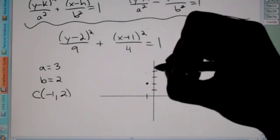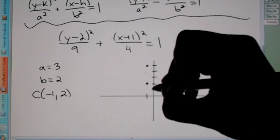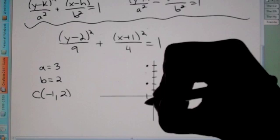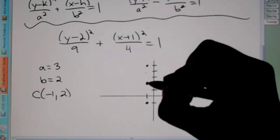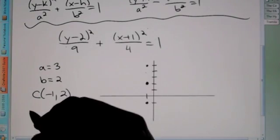From your center, notice a is underneath the y. So you're going to go up and down 3 from the center. So 1, 2, 3. Going to go up 3, here you're going to go down, 1, 2, 3. Because again, here's the center, right here. We went up 3 and down 3, because a is underneath the y.